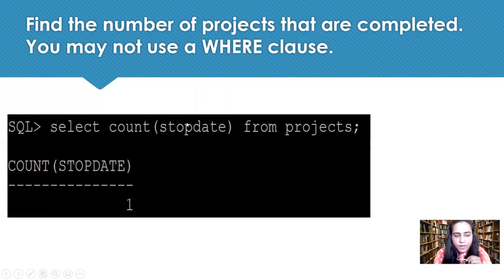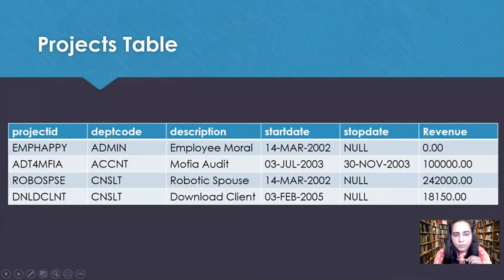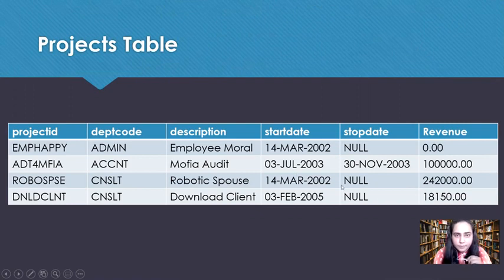So we write SELECT COUNT(stop_date) FROM projects, and it returns one. That's because in the projects table there is only one project that has a stop date — the others are null, meaning they are still ongoing. Only one project has completed.